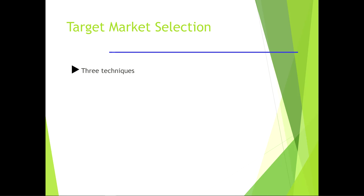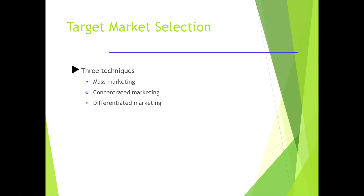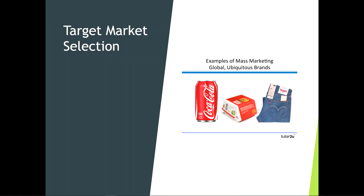Target market selection involves three techniques: mass marketing, concentrated marketing, and differentiated marketing. Mass marketing involves companies that sell products globally with widely recognized brands — sometimes the packaging alone is enough to identify the brand. This is called being ubiquitous.